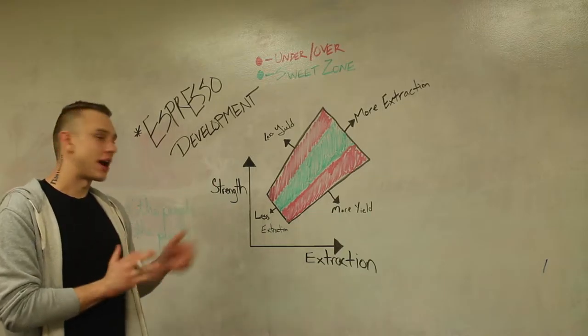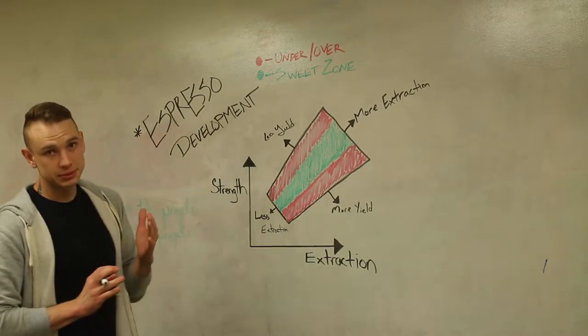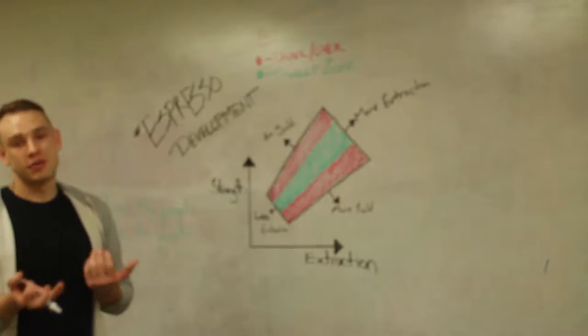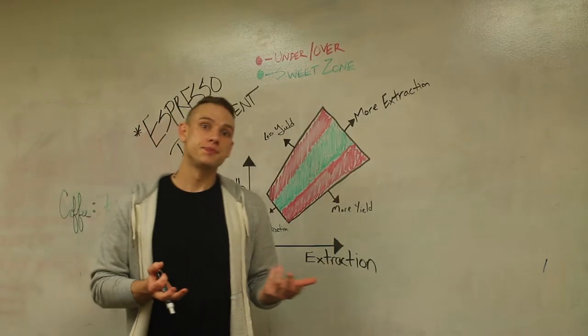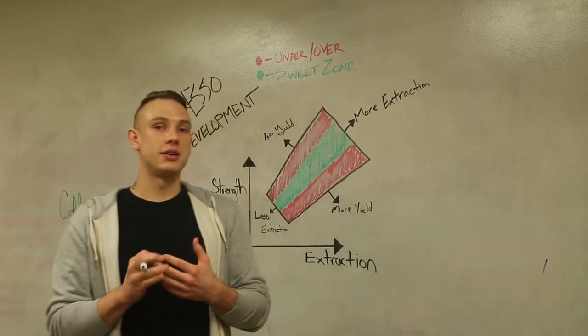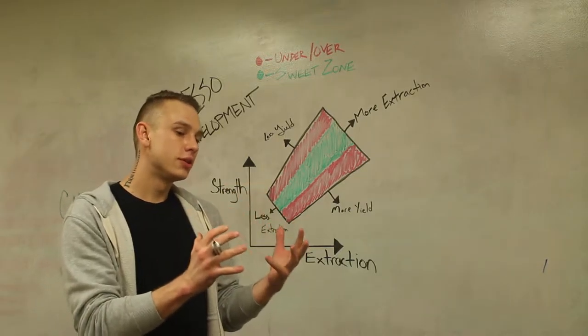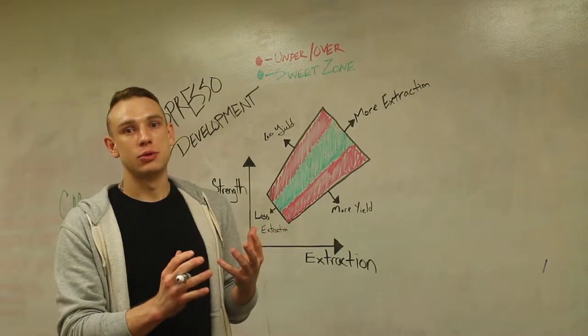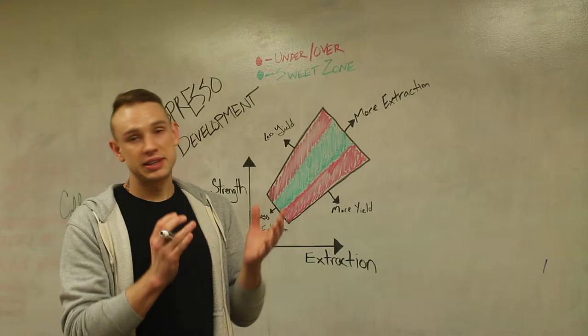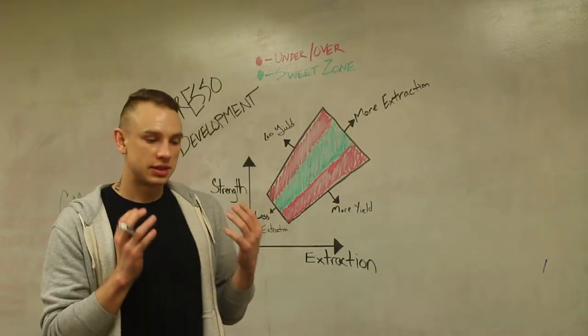So this graph is about espresso development and it's a common misconception in coffee as well as espresso that you can actually only have a single range of numbers that will provide the best and perfect cup of coffee. That's simply not true.